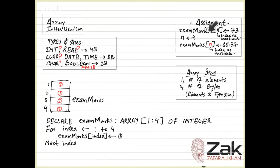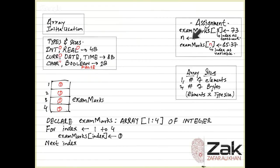For assignment, if we want to assign a value to the third position of exam marks, we write: ExamMarks[3] ← 73. This 3 is an index and it is a constant — whenever this line executes, 73 will always be placed at location 3. Instead of a constant we can use a variable as well. So if n = 4, then ExamMarks[n] ← 65.37 becomes ExamMarks[4] ← 65.37. The index can be a constant or a variable, and making the index a variable gives the whole power to the array.